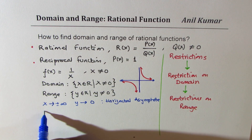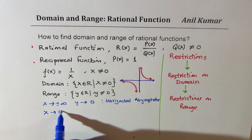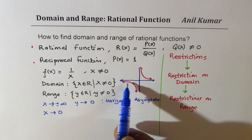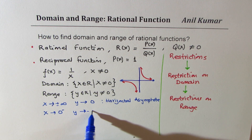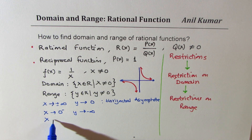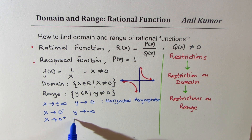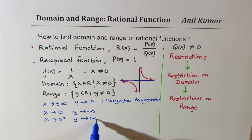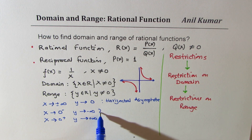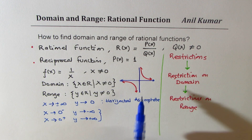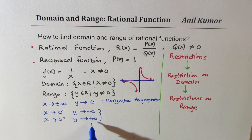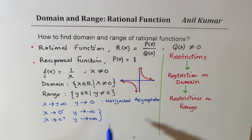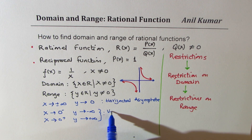You also observe that when x approaches 0 from the left side, y approaches negative infinity. And when x approaches 0 from the right side, y approaches positive infinity. When x is approaching a value and y is approaching infinity — which is not a real value — we call this a vertical asymptote.